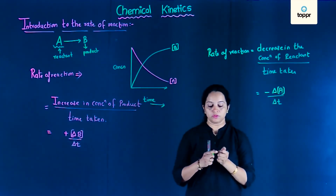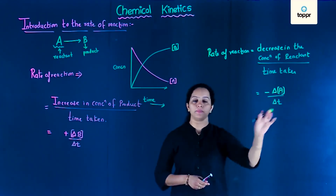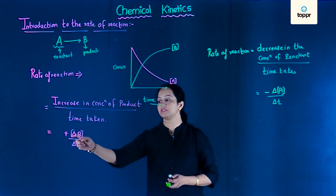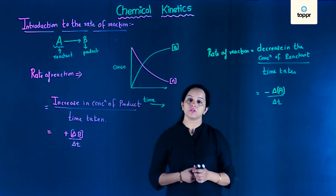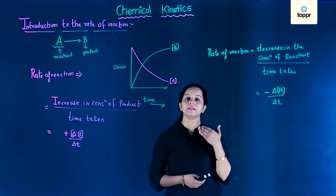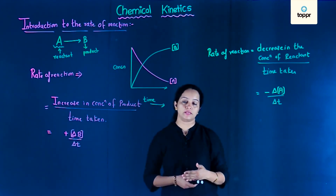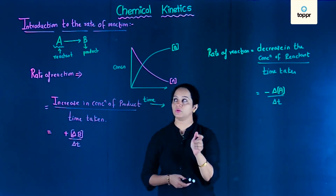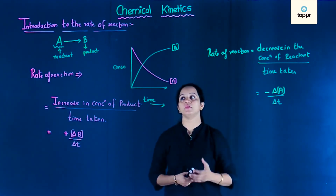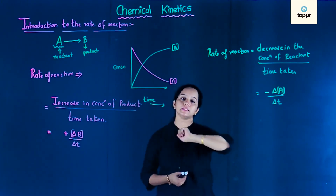So with respect to reactants we write minus delta A upon delta T, and with respect to product we write plus delta B upon delta T. Rate of reaction means either increase in the concentration of product or decrease in the concentration of reactant within the given time interval, as shown in this graph wherein concentration is plotted against time.